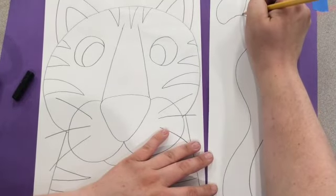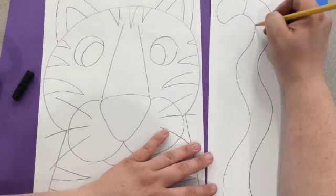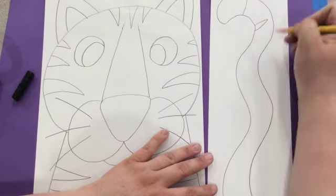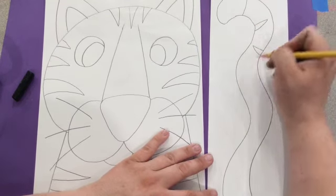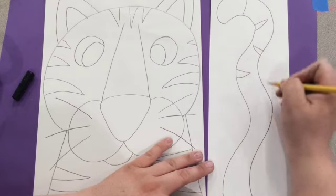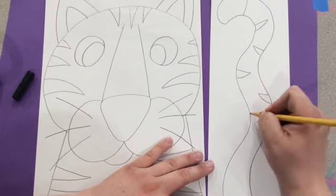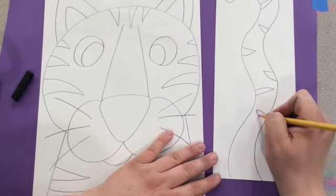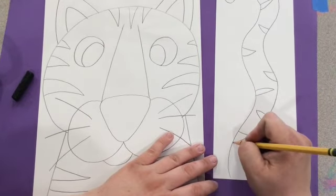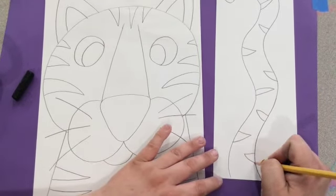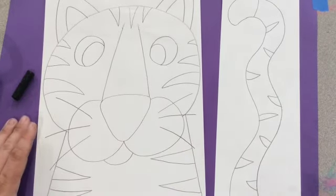We're going to add a line at the end because we're going to color the end of our tiger's tail in black. And then we can add some triangles for the stripes, just like we did with the body.